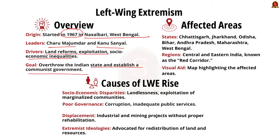The rise of left-wing extremism in India is primarily due to socio-economic disparities, landlessness, and the exploitation of marginalized communities, particularly tribals and lower castes. Poor governance, corruption, and inadequate public services have further fueled discontent. Additionally, displacement from land due to industrial and mining projects without proper rehabilitation has aggravated grievances. These factors created a fertile ground for extremist ideologies advocating for the redistribution of land and resources.